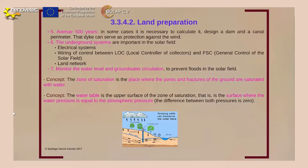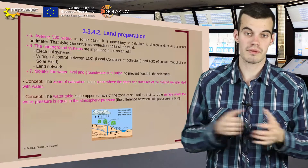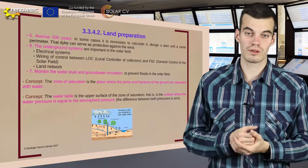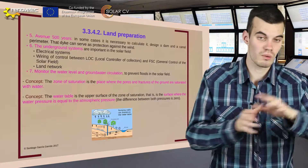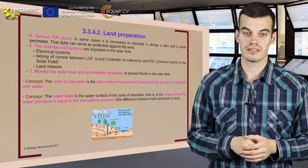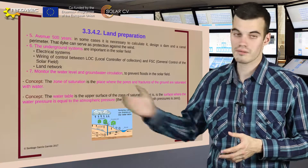In some cases it is necessary to calculate the 500-year avenue, because of heavy rains. Thanks to the drainage system, we are going to build a dam and a channel perimeter to absorb and contain the rain water.